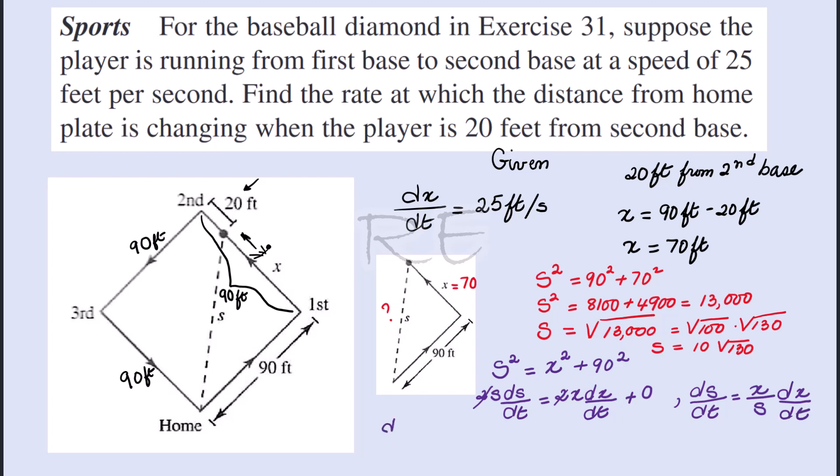Since we have x, s, and dx/dt, we'll replace them into the equation. So ds/dt equals 70 divided by 10√130, multiplied by dx/dt, which is 25 feet per second.